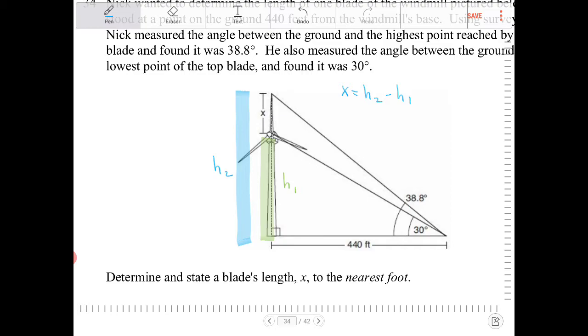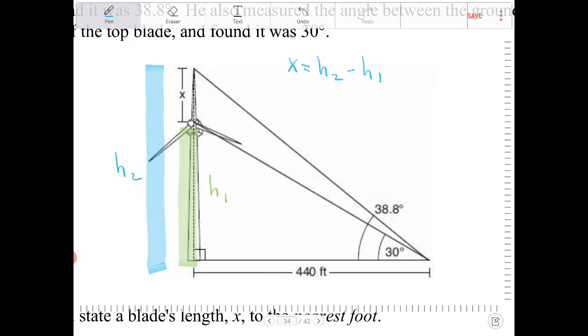To figure out what h1 is, look at the small triangle. h1 is opposite 30 degrees and 440 is adjacent to 30 degrees. Which trig ratio are we using - sine, cosine, or tangent? Since the opposite side is h1 and adjacent is 440, we're using tangent.